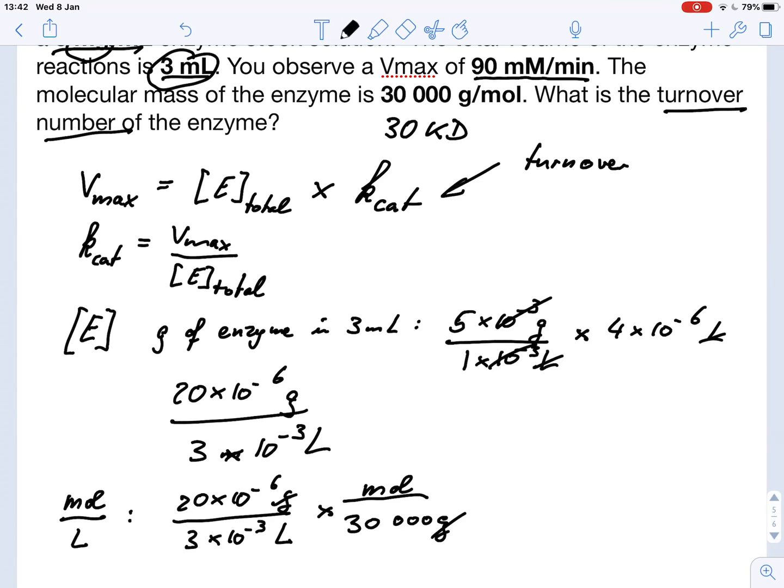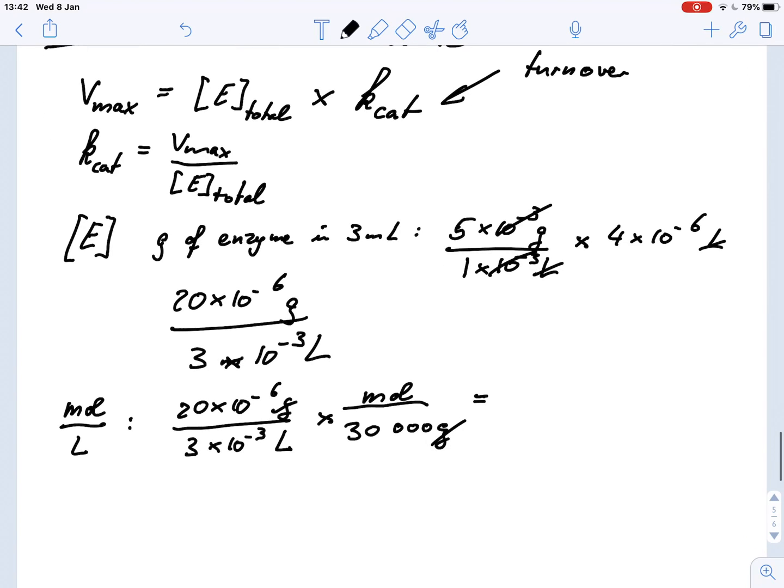So we would write this as moles per 30,000 grams. What we see is that the grams cancel out and we've got the unit moles per liter. So we need to calculate 20 times 10 to the minus 6 divided by 3 times 10 to the minus 3 divided by 30,000. And if we put that in a calculator, we would get something like 2.2 times 10 to the minus 7 moles per liter.